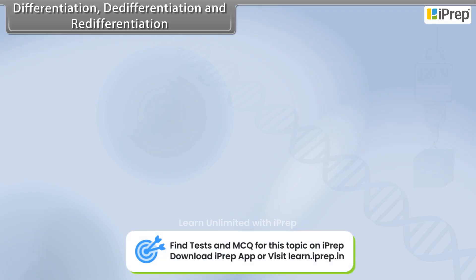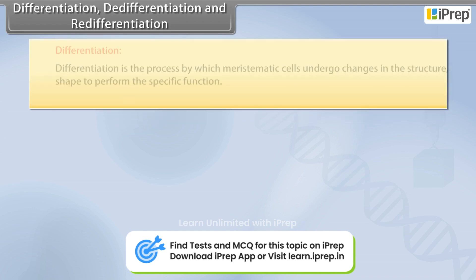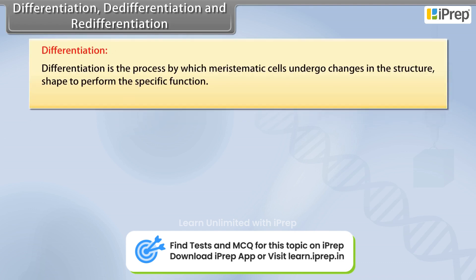Differentiation is the process by which meristematic cells undergo changes in structure and shape to perform specific functions.